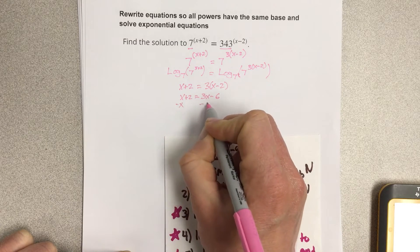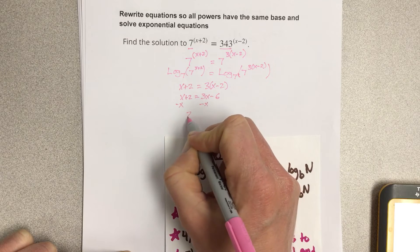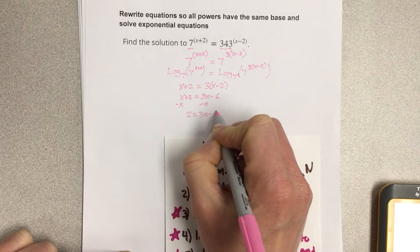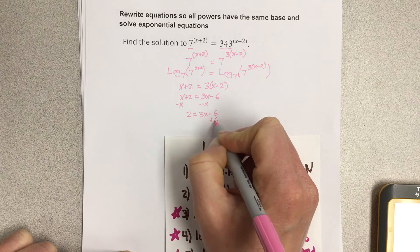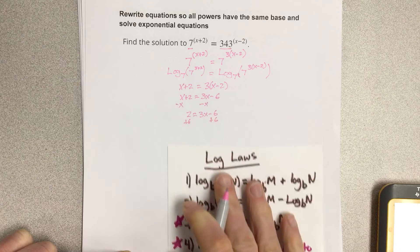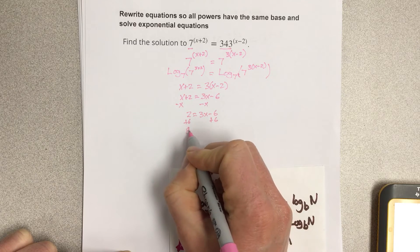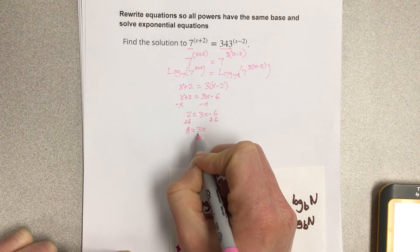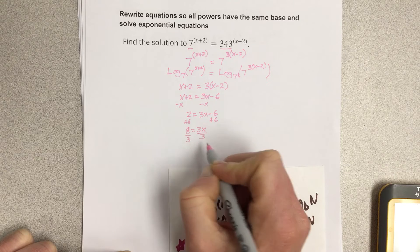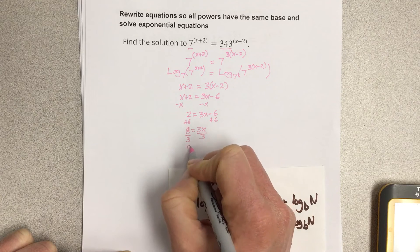Subtract the x on the right side: 2 = 3x-6. Let's add the 6 to each side and we get 8 = 3x, and then now we can divide by 3 and we'd end up with 8 thirds.